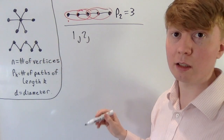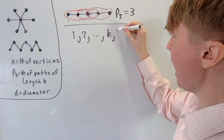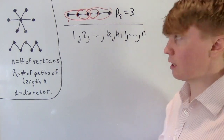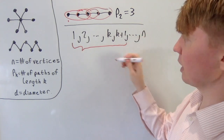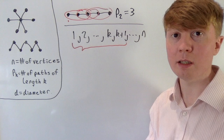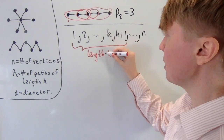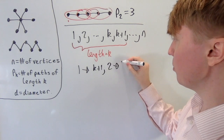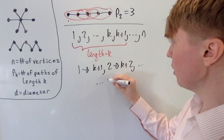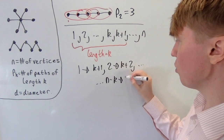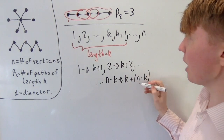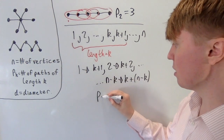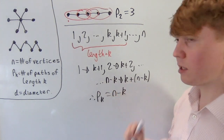Now generalizing: with n vertices in a line and k less than n, the first path of length k includes vertices 1 up to k+1. We can enumerate these — from 1 to k+1, then from 2 to k+2, and so on, up to n−k to n. So a linear tree with n vertices has exactly n−k paths of length k.